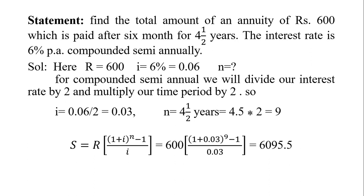For compounded semi-annual, we divide our interest rate by 2 and multiply our time period by 2. So i = 0.06/2 = 0.03, and n = 4.5 years × 2 = 9. After substituting the values, S = 600[(1+0.03)^9 - 1]/0.03 = Rs. 6095.5.